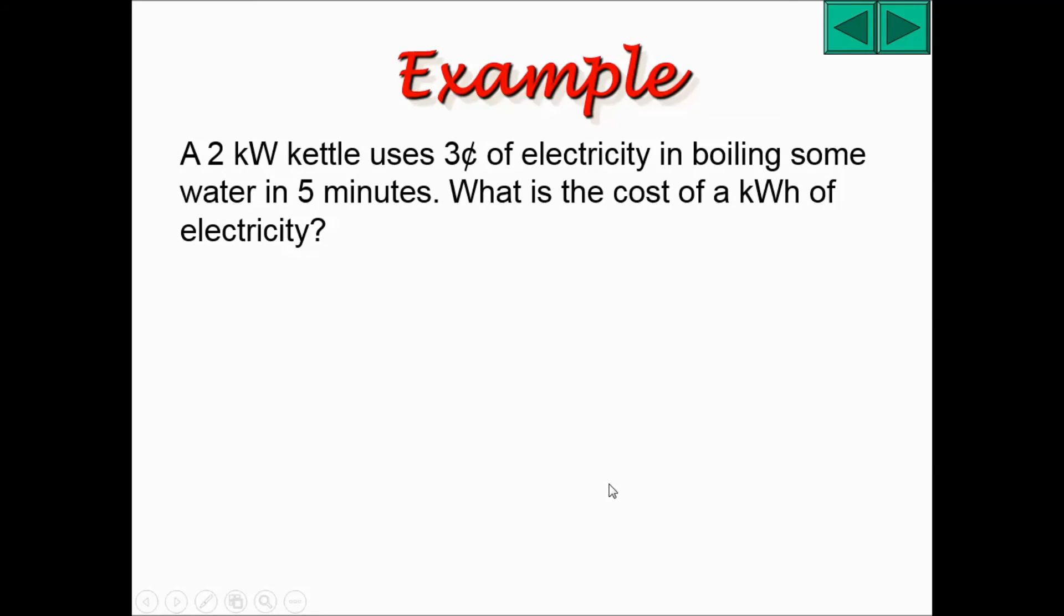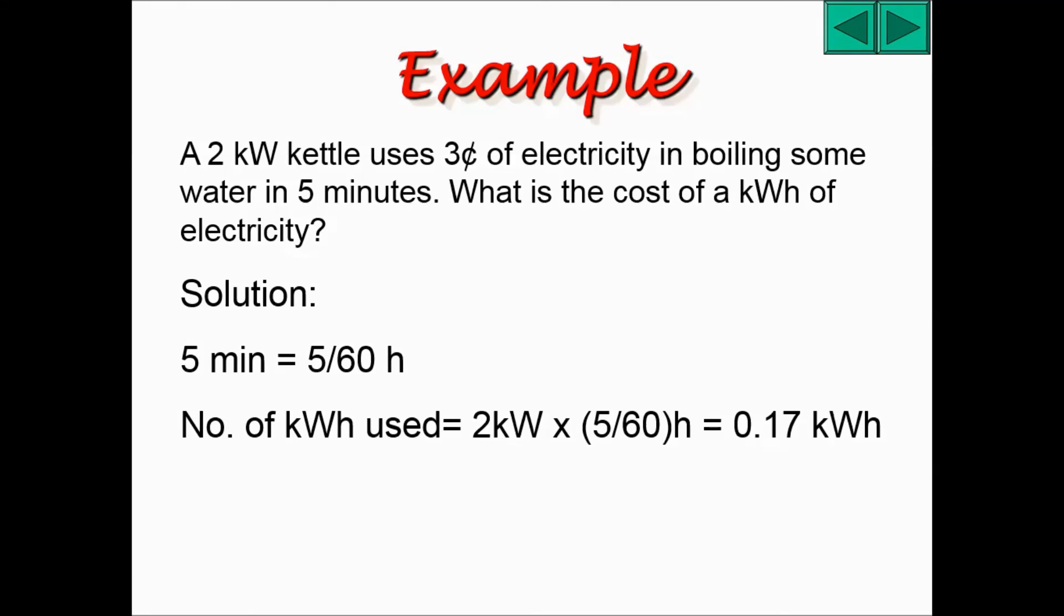Let's look at the second example. Please solve it before you find the answer. First, convert the minutes to hours, where 5 minutes will be equal to 5 over 60 hours. The second part will be to calculate the number of kilowatt hours used, which is 2 kilowatts times 5/60 hours. That will give you 0.17 kilowatt hours.